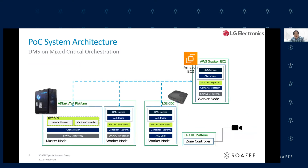Here is the Piccolo system architecture we designed. We are using the AVA platform by ADLINK. We implement K3s, and on top of that we implement Piccolo, the LG operator. This is the master node. We also have a CDC device as the worker node. We are using Amazon Graviton for the cloud. This is the big picture of our Piccolo system architecture.